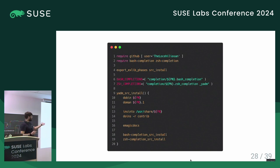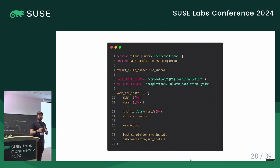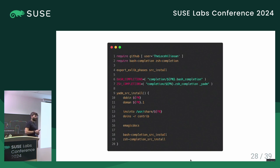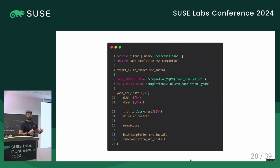This is a really simple package. If you have a more complex package — for example, one that requires CMake and also has a Python library — then you need to call the CMake library, then call Python, and this gets really complex really easily.